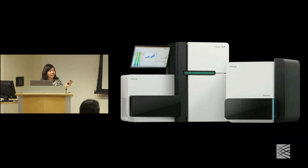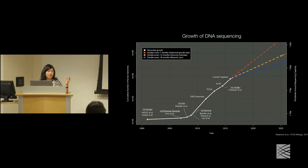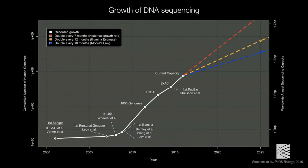Now we have high-throughput sequencing and microarray machines that contribute to graphs tracking the growth of human DNA sequences. This shows that biological data is crushing Moore's Law.